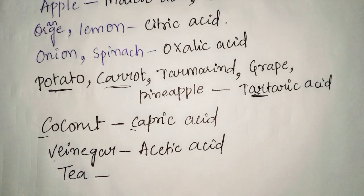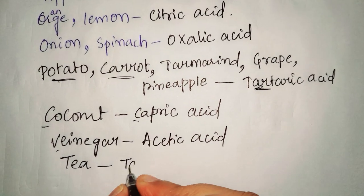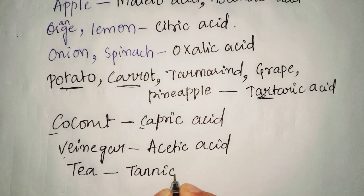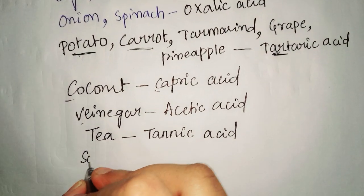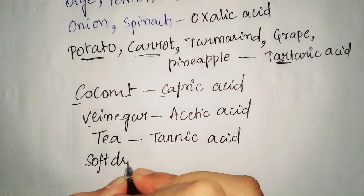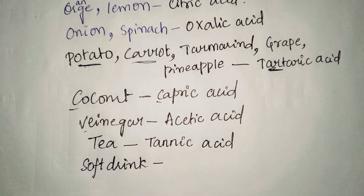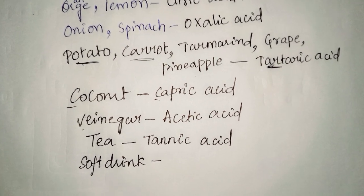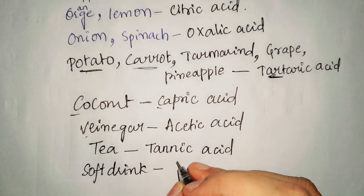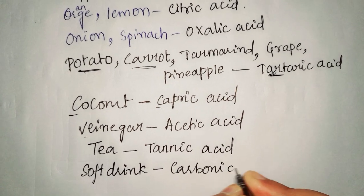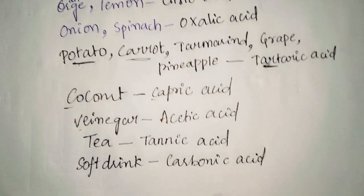And if you talk about soft drinks which young people are drinking nowadays, have you ever seen the soft drinks ingredients by turning it around? There you can find carbonic acid - so it includes carbonic acid.